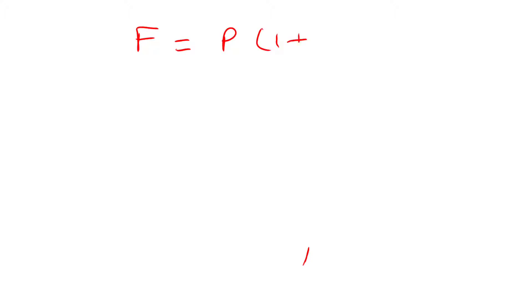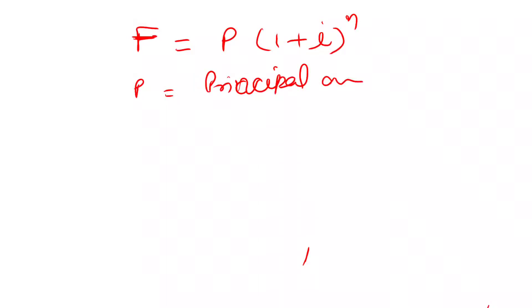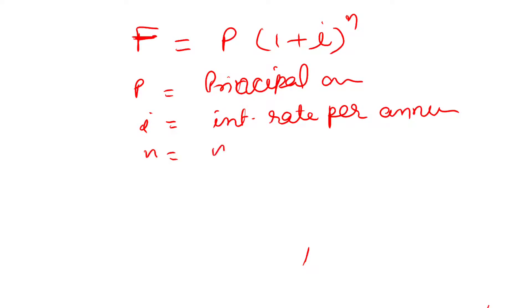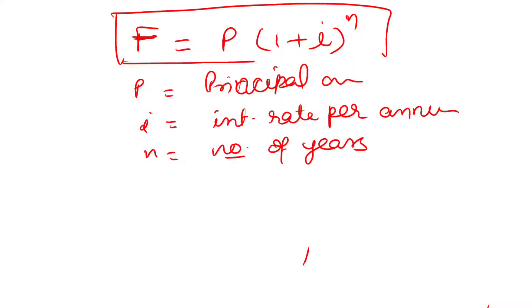Now let's look at the compound interest formula. When finding the future sum by compounding the principal, the formula is: F = P × (1 + i)^n, where P is the principal amount, i is the annual interest rate, and n is the number of years for which you are compounding. This is the formula of the compounding method to find the future value of a sum.